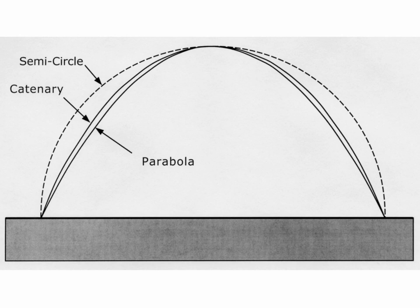So uniform load along the horizontal leads to the parabola, which we will prove analytically. Uniform load along the curved member — along the arch — produces the catenary as the appropriate funicular shape. The load on the horizontal is greater near the support points than near the center, and as a consequence, the catenary tends to bulge out a bit more than the parabola. The catenary has to be fuller in form near the supports to respond to the higher loads there, and relatively flatter near the center of the arch.